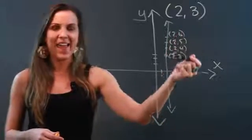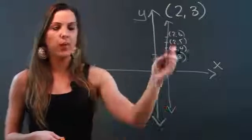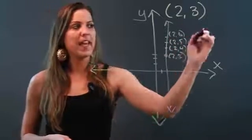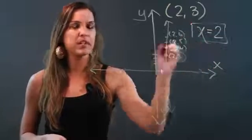What I notice is that my x-coordinate is constantly 2. So the equation for this vertical line that passes through that point is that x is a constant and that constant is 2. So the equation here is x equals 2.